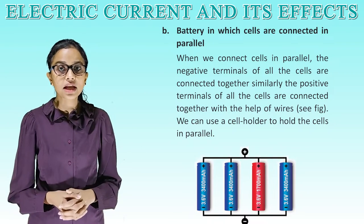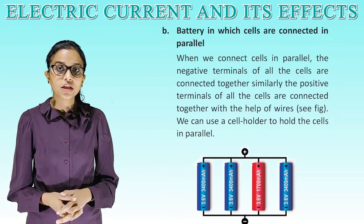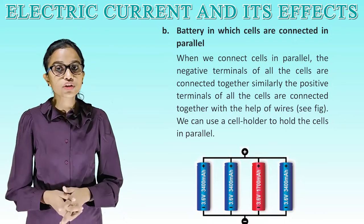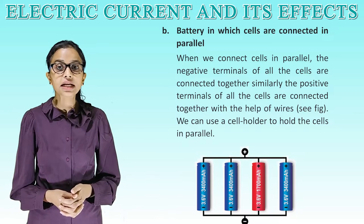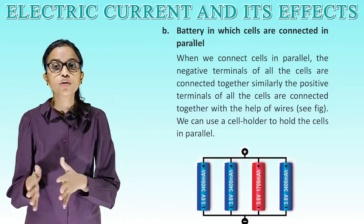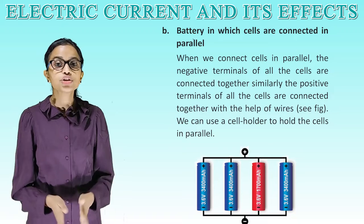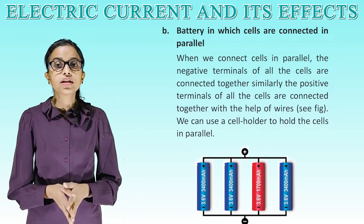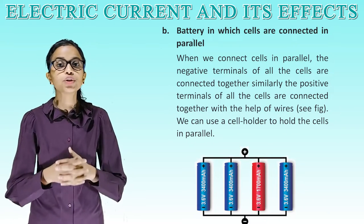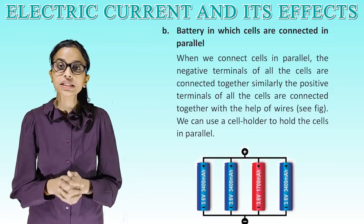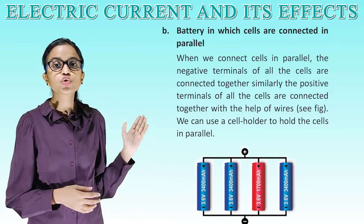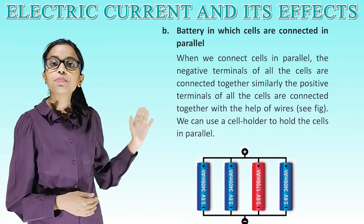Battery in which cells are connected in parallel. When we connect cells in parallel, the negative terminals of all the cells are connected together. Similarly, the positive terminals of all the cells are connected together with the help of wires. We can use a cell holder to hold the cells in parallel, as shown in the figure.